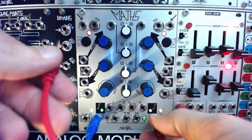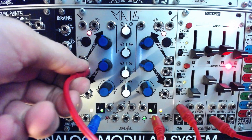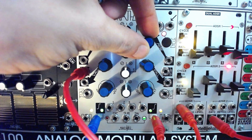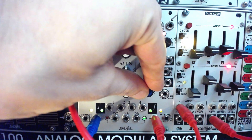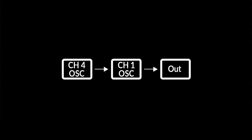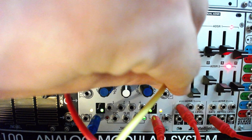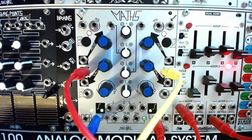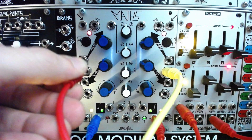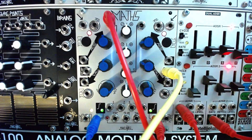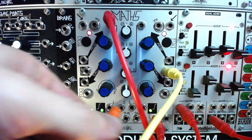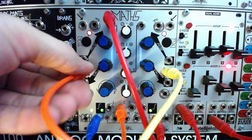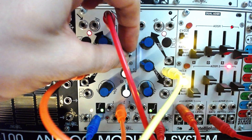Now route the unity output from channel 4 into the BOTH input on channel 1. Channel 4 is now frequency modulating channel 1. The BOTH input on channel 4 can be used to control atonal pitch changes. To attenuate the FM depth, we can route the channel 4 unity out into channel 2, and then route the channel 2 variable output into the channel 1 BOTH input. The channel 2 attenuverter can then be used to increase the index of the frequency modulation.